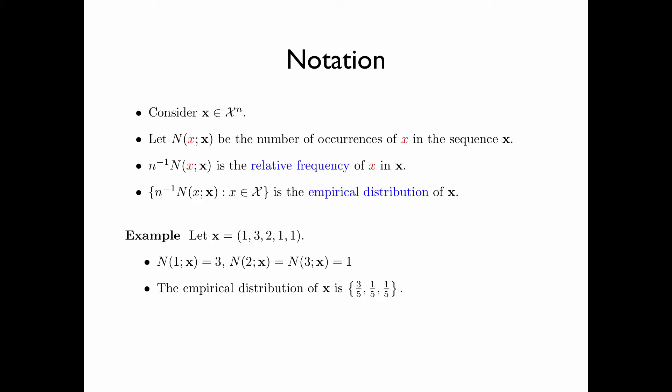As an example, consider the length 5 sequence consisting of the values 1, 3, 2, 1, and 1. Then the number of occurrences of 1 is equal to 3, the number of occurrences of 2 is equal to 1, and the number of occurrences of 3 is equal to 1. The empirical distribution of this sequence x is equal to 3/5, 1/5, and 1/5.